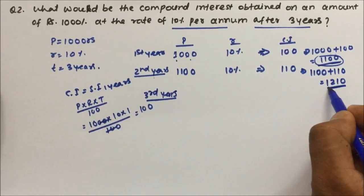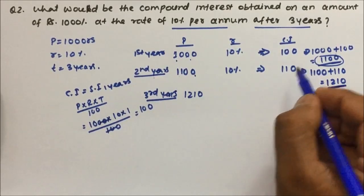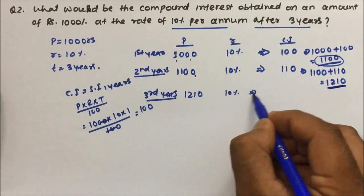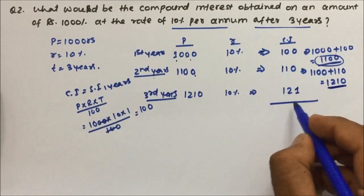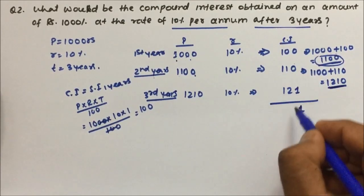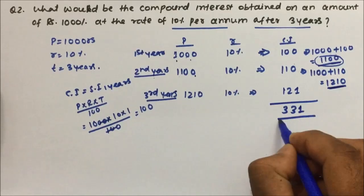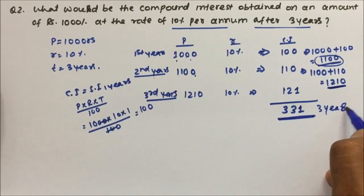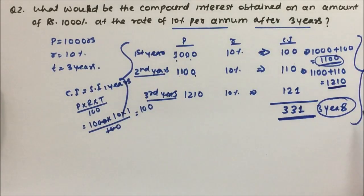Total compound interest for 3 years: 100 plus 110 plus 121 equals 331 rupees. So it is very simple to calculate compound interest without using any formula if you understand the concept. Thanks for watching the video.